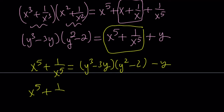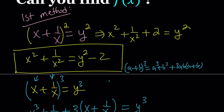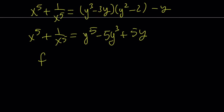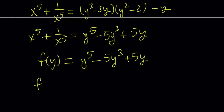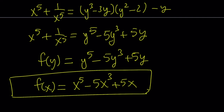Multiplying these together and distributing minus y, we get y to the 5th minus 5y cubed plus 5y. Remember we called x plus 1 over x equal to y, so we now have f of y equals y to the 5th minus 5y cubed plus 5y. Since we're looking for an expression in x, this becomes f of x equals x to the 5th minus 5x cubed plus 5x.